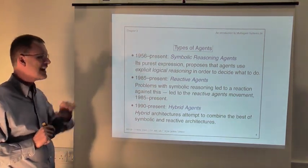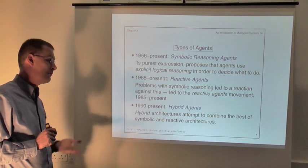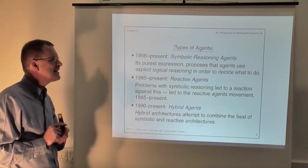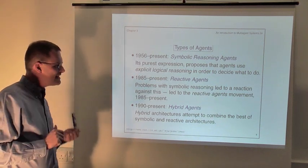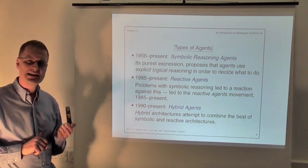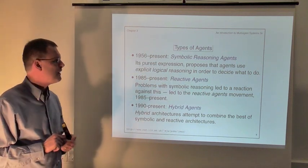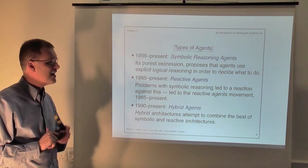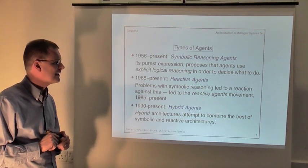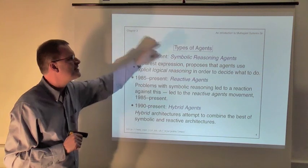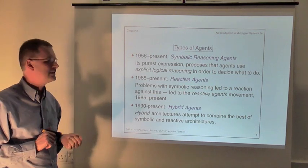The first one we're going to look at, which dominated in the early days of AI right through to the present day, is the idea of symbolic reasoning agents. The idea of symbolic reasoning agents is the idea of building agents that have symbolic and typically logical representations of their environment, and that decide what to do via something like logical reasoning. And we're going to look at a variant of these symbolic reasoning agents that we will call practical reasoning agents.